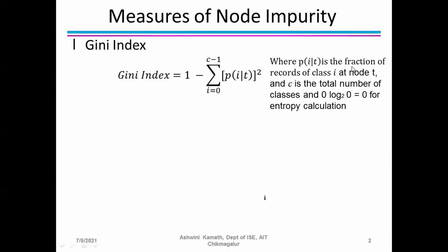When we use entropy, we note that 0·log₂(0) = 0 for the entropy calculation. The Gini index formula is 1 minus the summation from i=0 to c−1 of p(i|t) squared, where c is the number of classes present in your example. p(i|t) is the fraction of records of class i at node t.